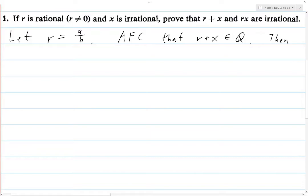that R plus X is an element of the rational numbers Q. Then what does that mean? Then that means that we can write R plus X as a quotient, C over D, where, of course, C and D are integers. And of course, we also have D is non-zero and C and D, this is a reduced fraction, so on and so forth. But anyways,